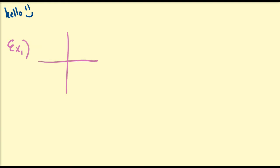Let us assume we have an elliptical curve such as the following, and let's assume this ellipse goes up to seven and down to negative seven, goes to the left as far as negative three and to the right as far as positive three, where the vertical axis is the y-axis and the horizontal axis is the x-axis. Let's call this relation r. We can see it obtains all x values between negative three and three, and all y values between negative seven and seven at least one time.